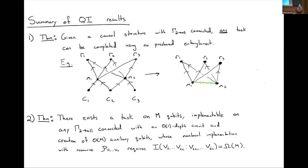Question: why restrict to order-one depth circuits? The speaker explains: the scattering region has finite extent, so if a task required a number of gates exponential in the input system size, agents might not be able to complete the task in the limited time available at their meeting point. Restricting to finite depth circuits lets us avoid worrying about whether agents can physically complete the task during their causal meeting.